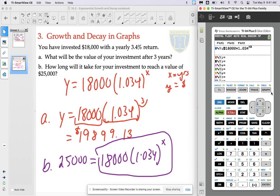And we're going to graph that function and take a look at it and see if we can identify the location where the value of the account is $25,000.